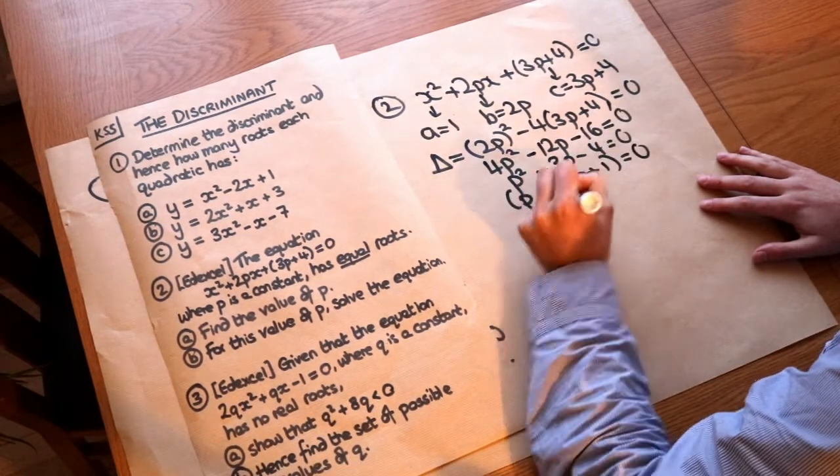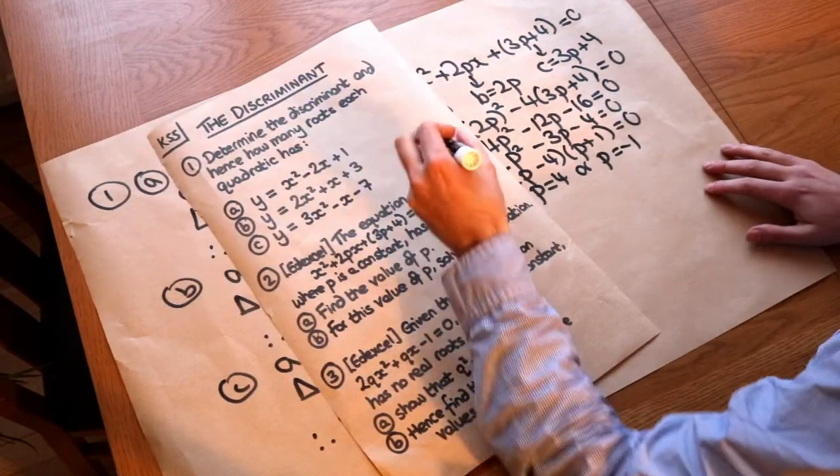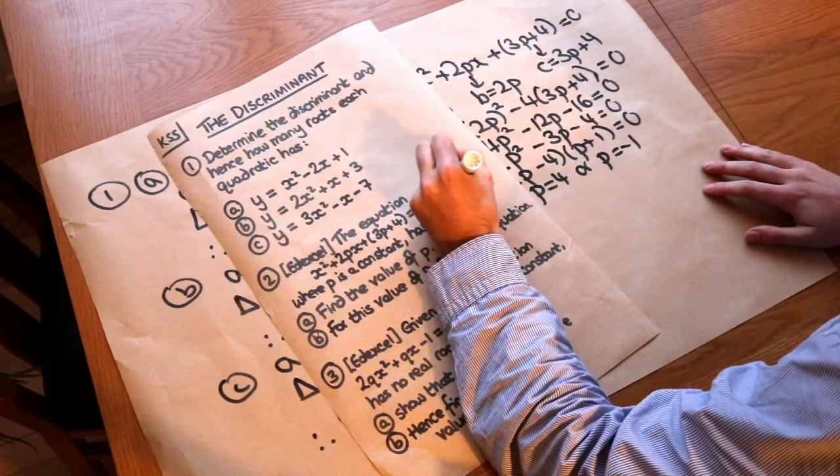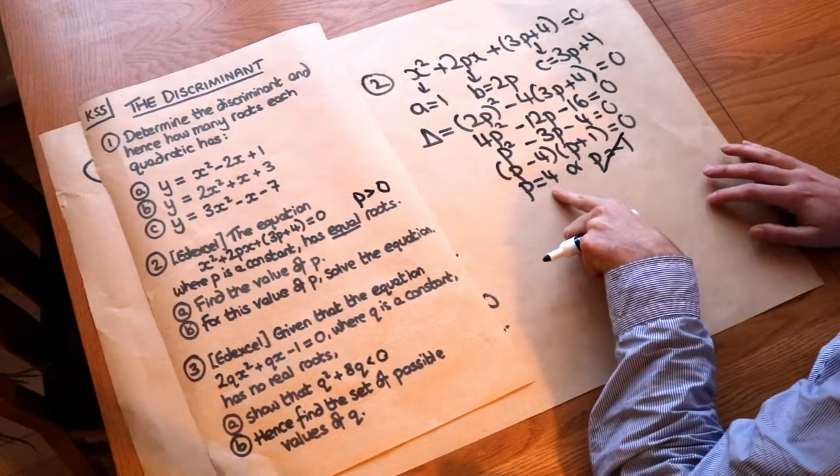That factorizes to give (p - 4)(p + 1) = 0. So p = 4, or p = -1. Now let's just say that I also required that p > 0, because they often do that in the exam. Then this is the value we want. We want that p = 4.